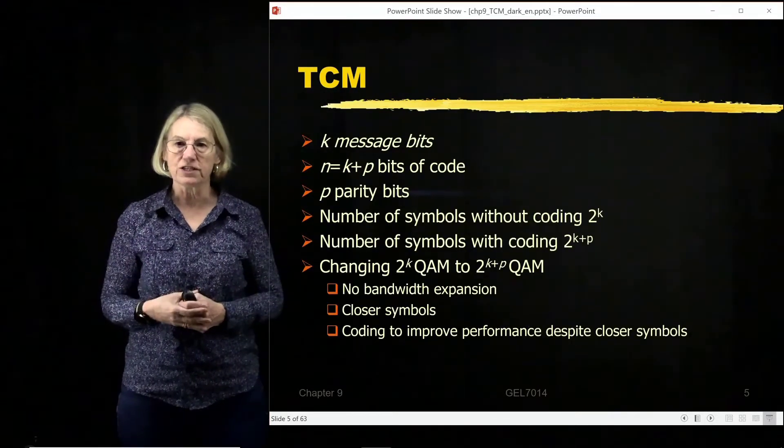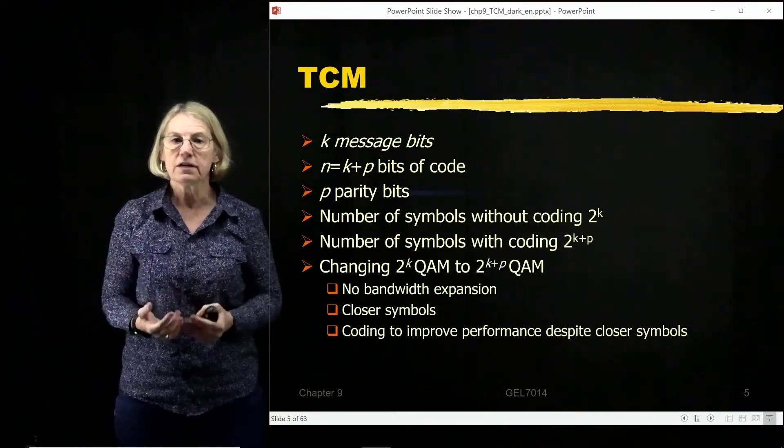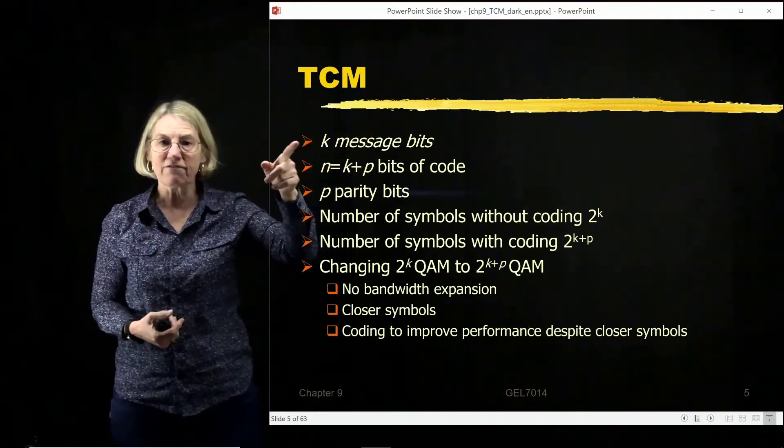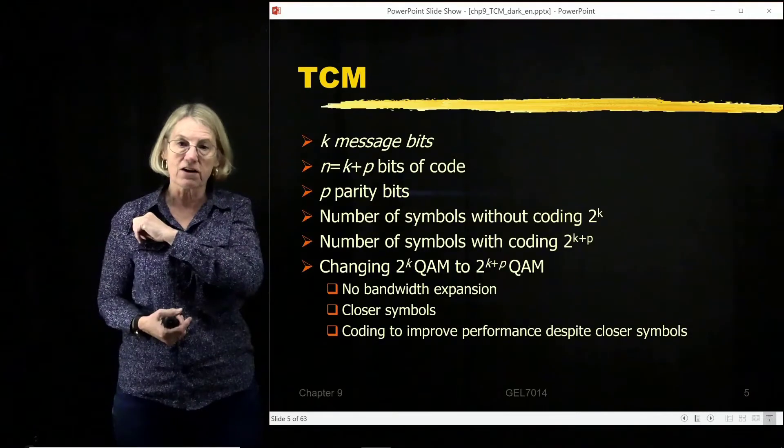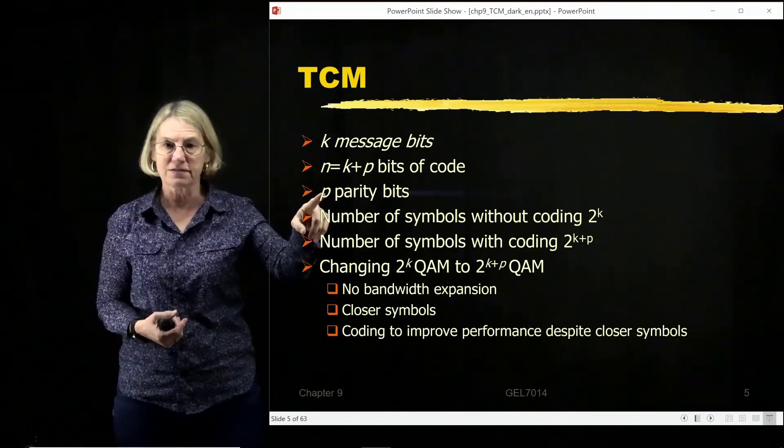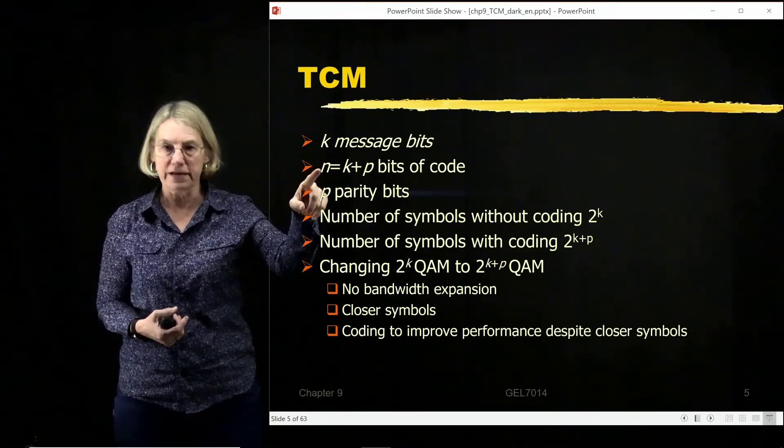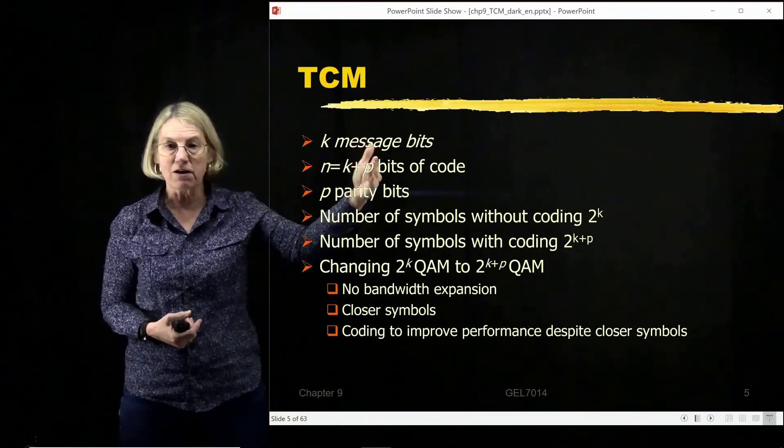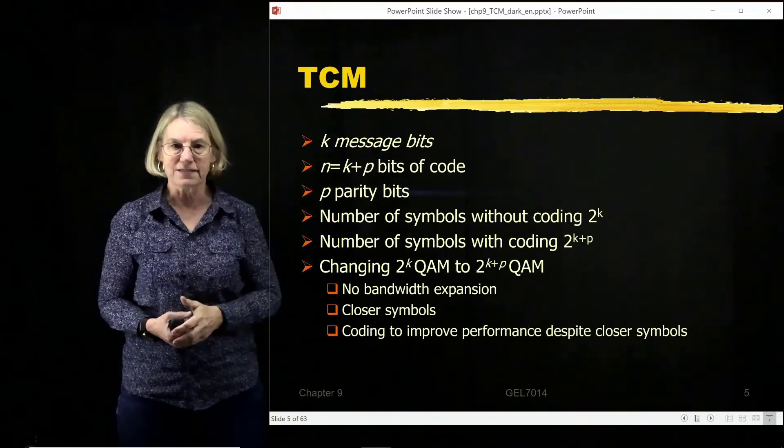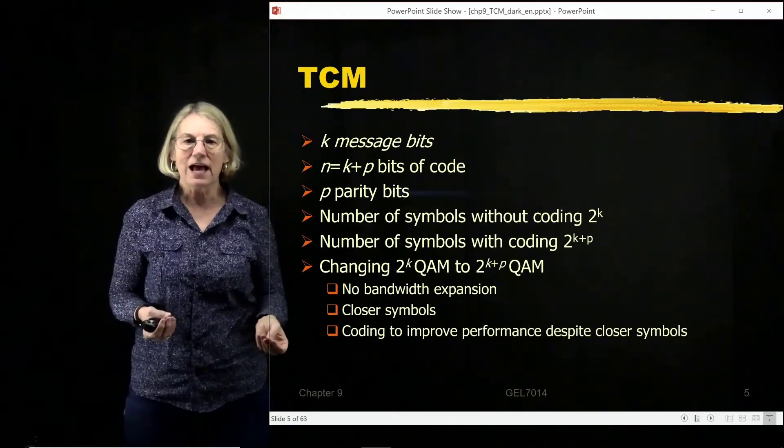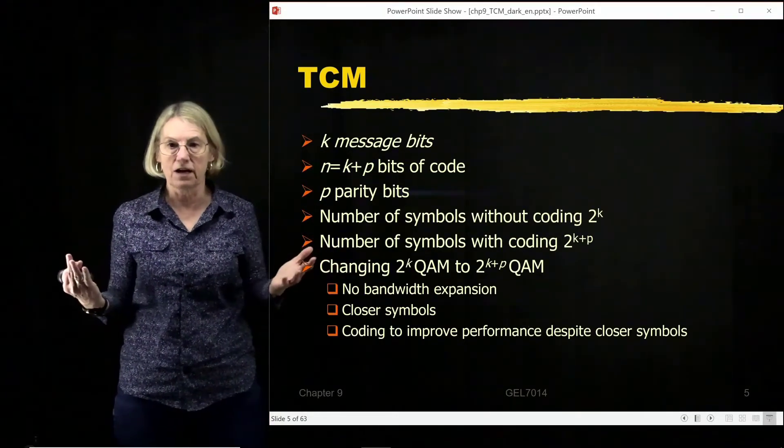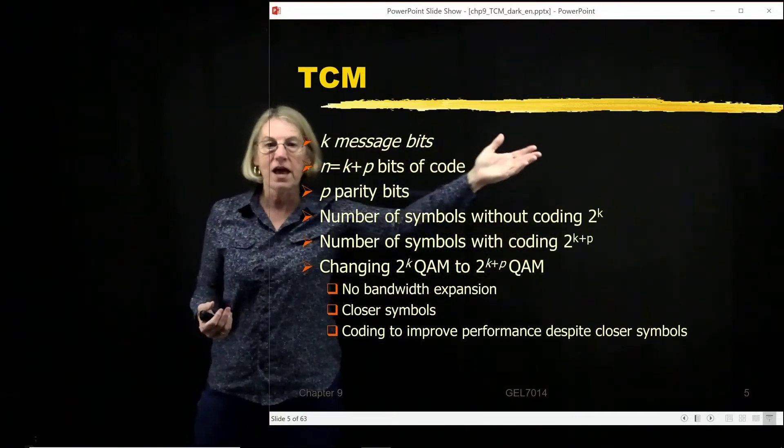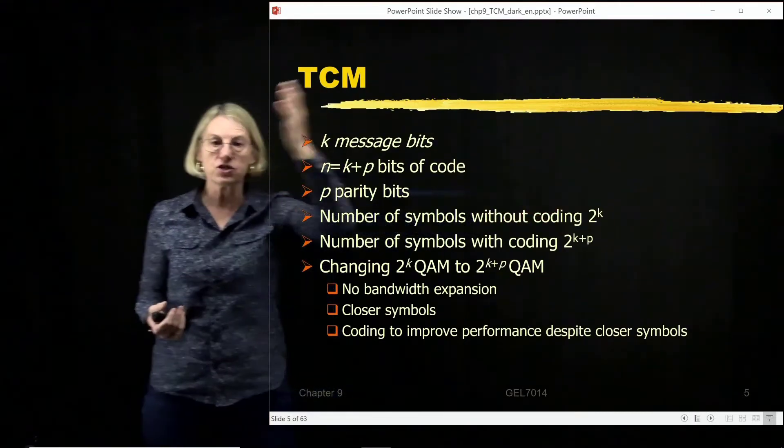So trellis coded modulation, it is an error correcting code, so there is an expansion in the number of bits in a block. So if we have K message bits, just like with other kinds of error correcting codes, we're going to add P parity bits. So that we have a total of N bits which is transmitted. So I put in K bits, I add to it some parity bits or the redundancy from the error correction and that gives me N bits. So if I have, how many symbols do I have when I don't have any coding? Well that would be 2 to the K. There would be K message bits to send and I would modulate them onto a specific symbol.